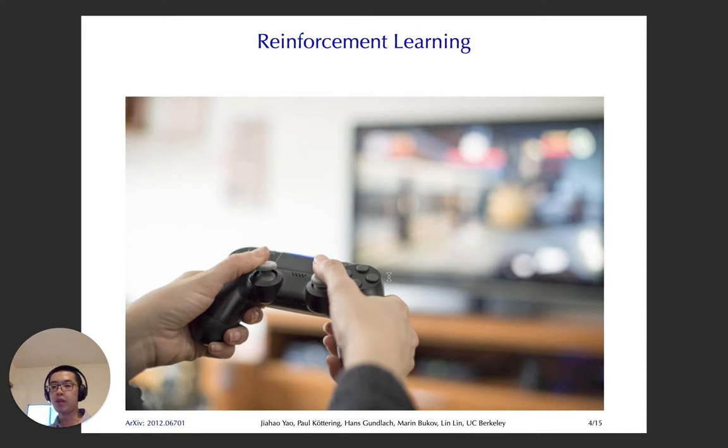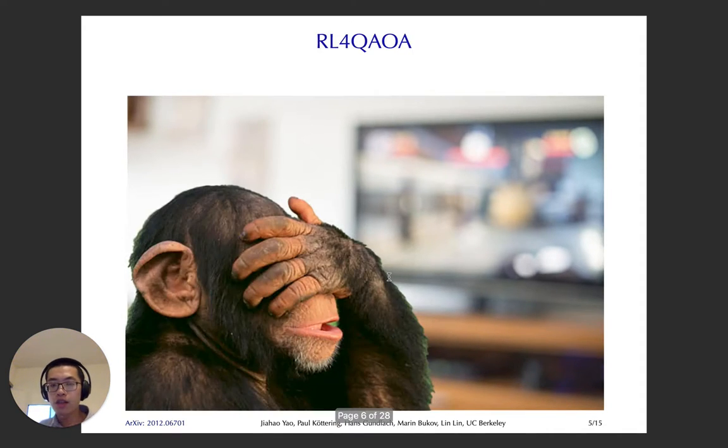When talking about reinforcement learning, you can think it is like playing video games and trying to figure out the best strategy to win the video games. In our settings for the RL-QAOA, it is actually without looking at the screen during the playing, because the reward is only given at the end of the episode. Or in the quantum setting, you cannot measure in the middle, and you only measure at the end of the episode. So you only know the reward at the very end. And this is the hardness of the problem, but you can think of it as you play the games often and often. Eventually, you will figure out the strategies, even though you didn't look at the screen.